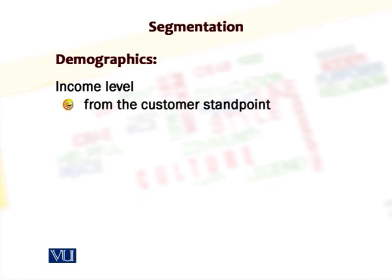Another basis is income level, which can be viewed from two standpoints: the customer standpoint and the donor standpoint. For example, income level is brought into play when classifying different households as to who will receive free food and who will receive food at a subsidized price. Any further subdivision of a segment into subsegments entails applying the same principles of drawing boundaries between different groups.